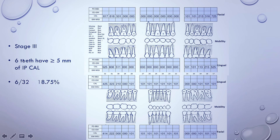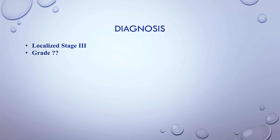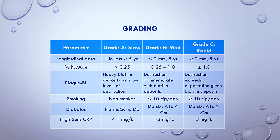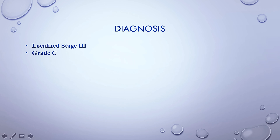Six teeth have 5 or more millimeters of interproximal attachment loss. Six over 32 teeth is 18.75%, which is less than 30%, so the extent is localized. The diagnosis is localized Stage 3. For the grade: there's no longitudinal data, he's a non-smoker, and non-diabetic. But looking at the radiographs, there's approximately 50 to 60 percent bone loss in a 45-year-old patient — 60 over 45 is greater than 1, so this is Grade C. Final diagnosis: localized Stage 3, Grade C.